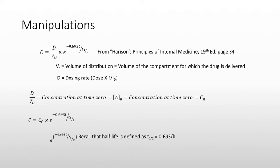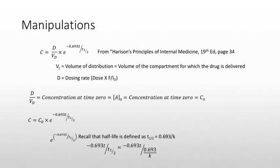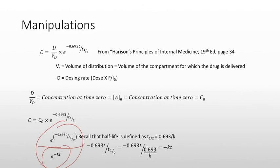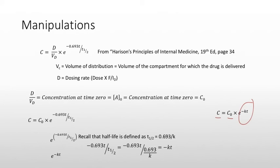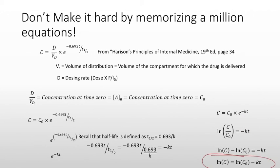What is that exponent? We know that the half-life equals 0.693 over K, so replacing half-life with 0.693 over K gives a term that reduces to negative KT. So my concentration equals my concentration at time zero times E to the negative KT. This is just the first-order rate law written in the Arrhenius form. Taking the natural log of everything eliminates E and gives back the familiar first-order rate law.